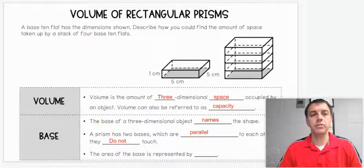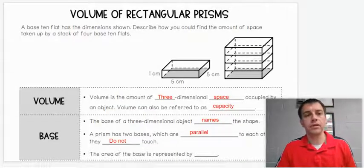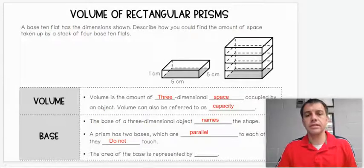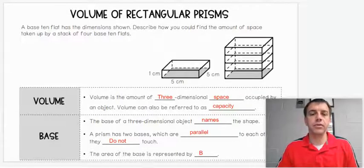We learned about this with triangular prisms and rectangular prisms both. The two bases do not touch but run parallel. The area of the base is represented by capital B.